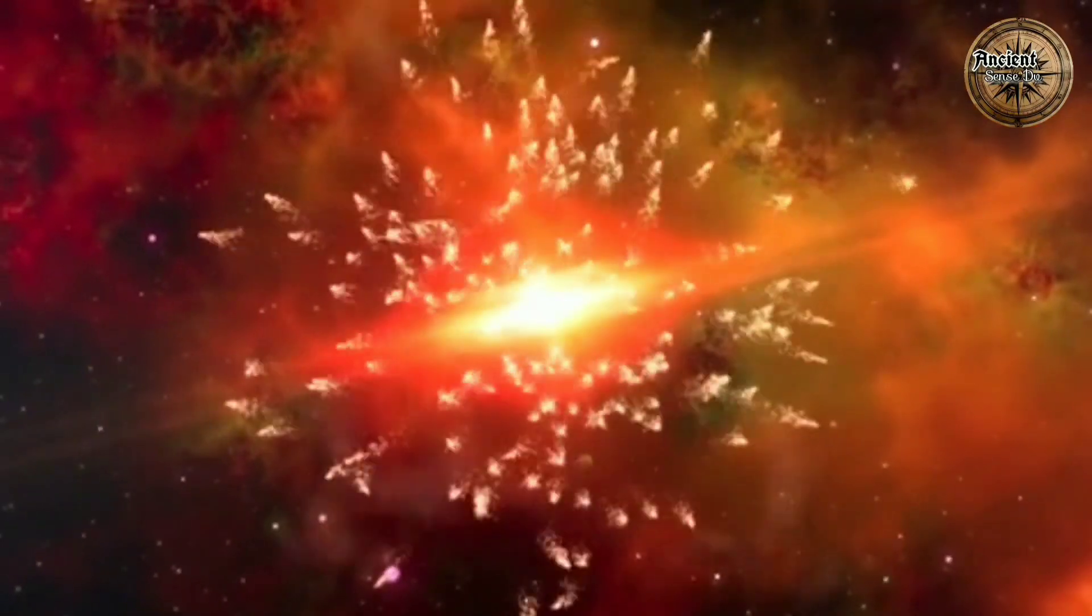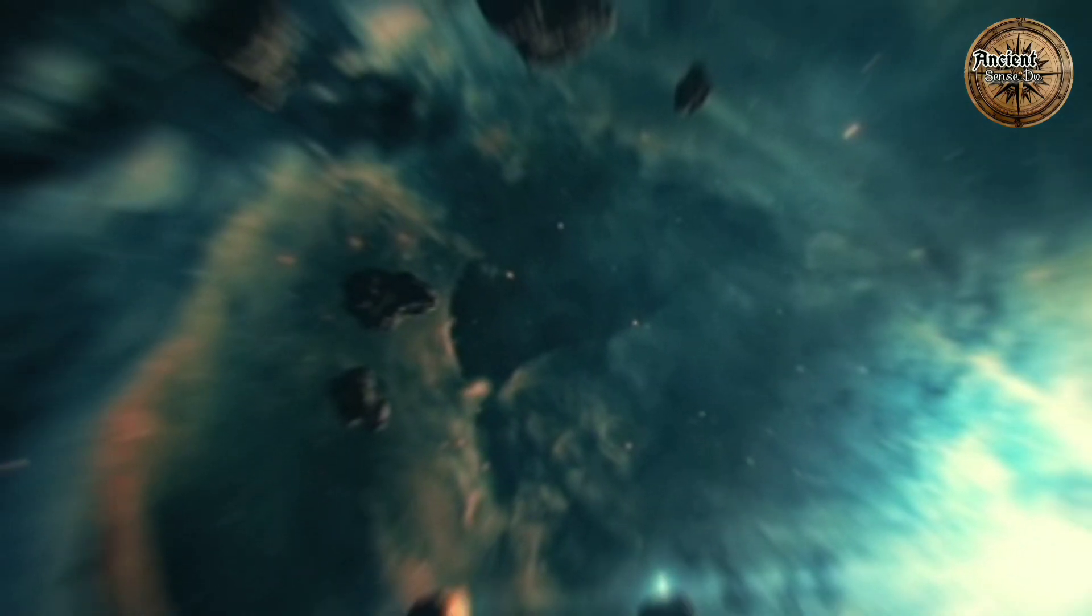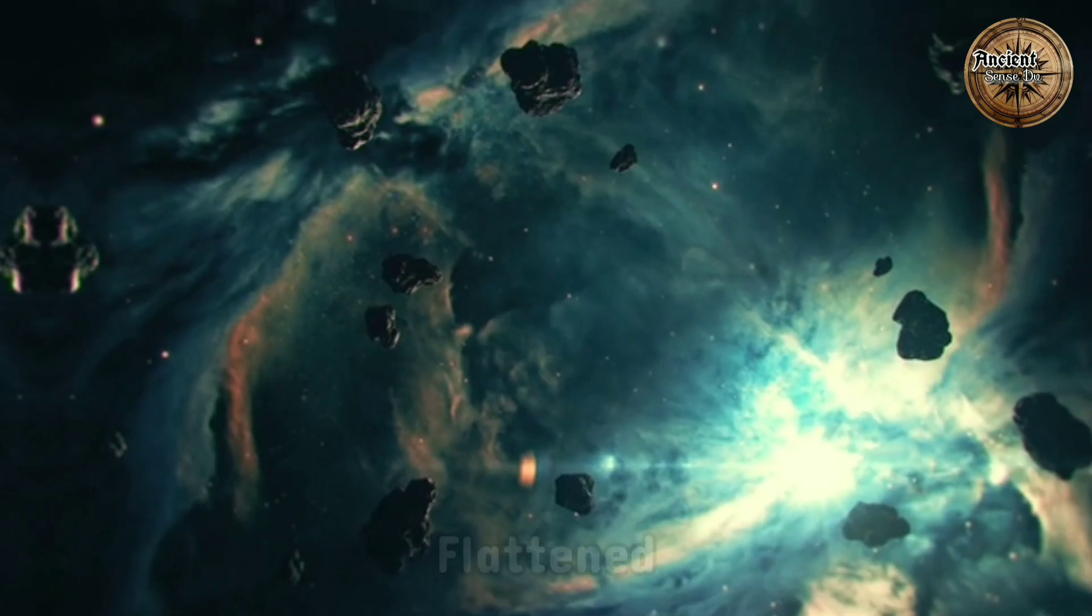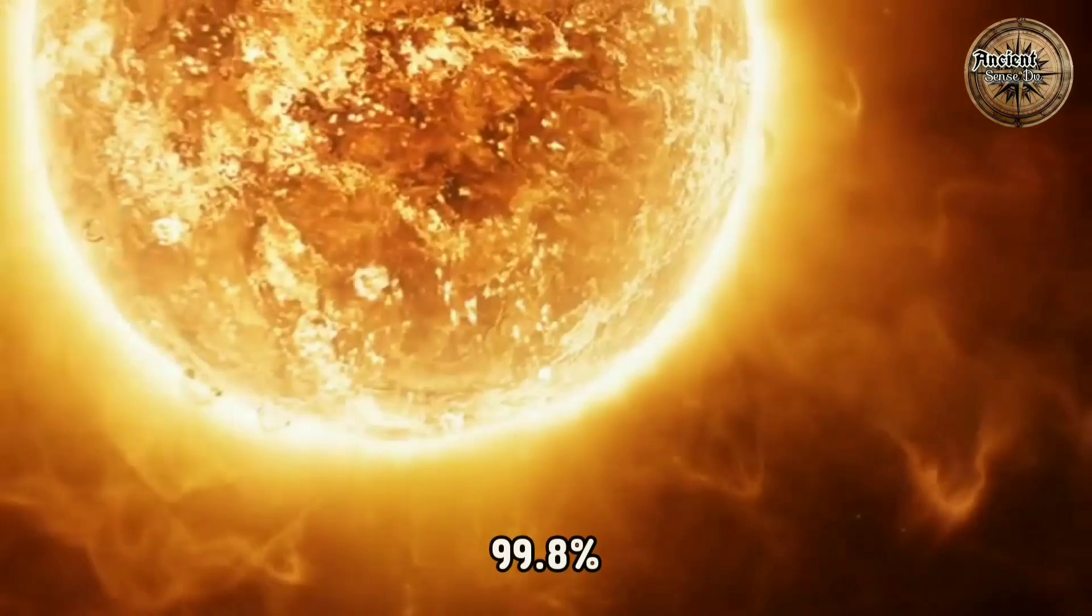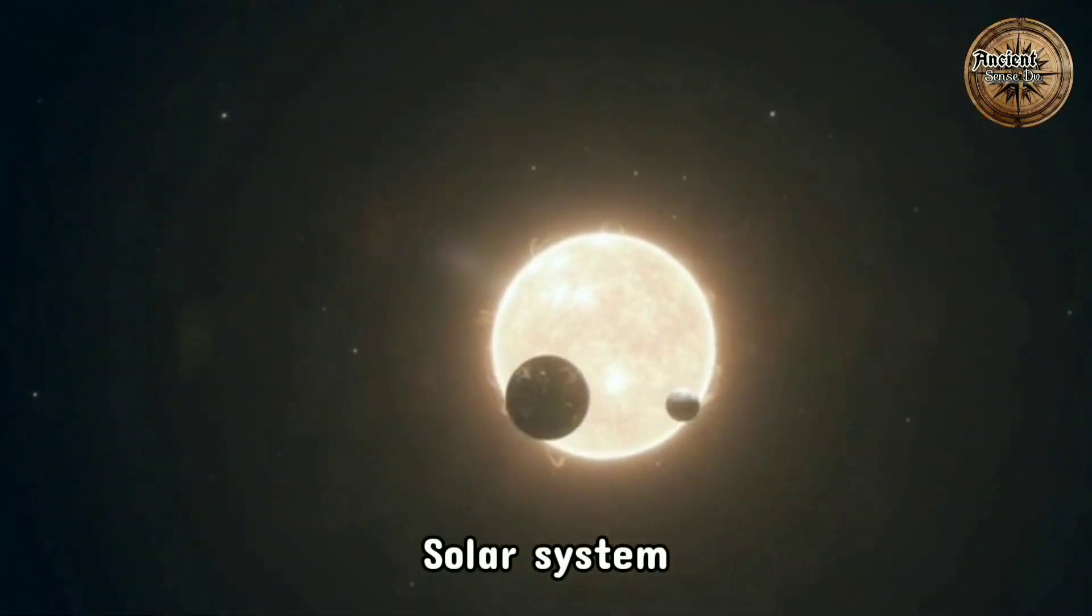As the nebula collapsed under its own gravity, it spun faster and flattened into a disk. Most of the nebula's material was pulled towards the center to form our sun, which accounts for 99.8% of our solar system mass.